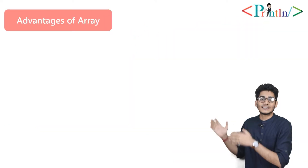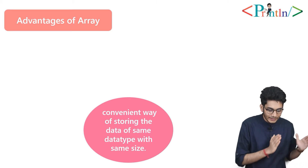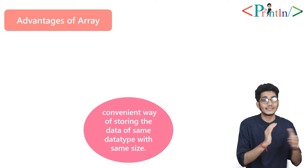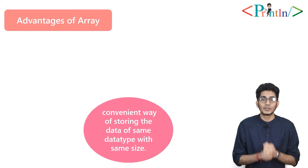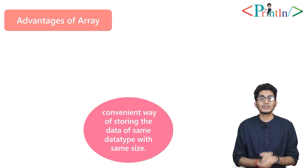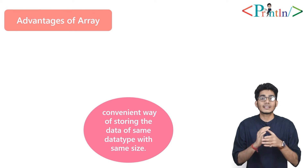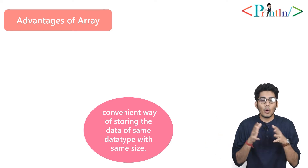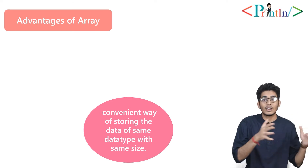So what are the advantages of an array? The first advantage is it's a convenient way of storing data of the same data type with the same size. Array only stores homogeneous data types. So if you declare an array of int, it will only store int. If you declare an array of long or boolean, it will only store values of that type.